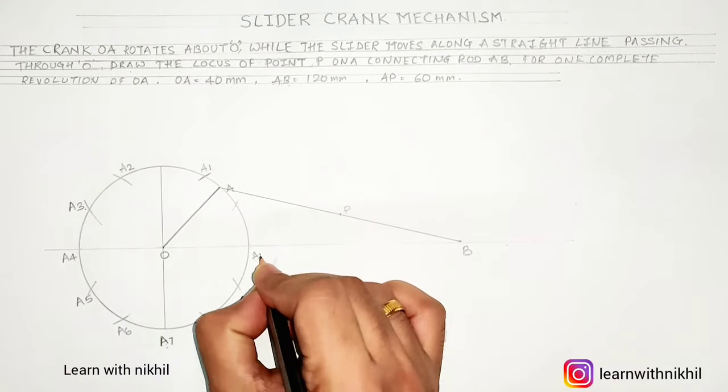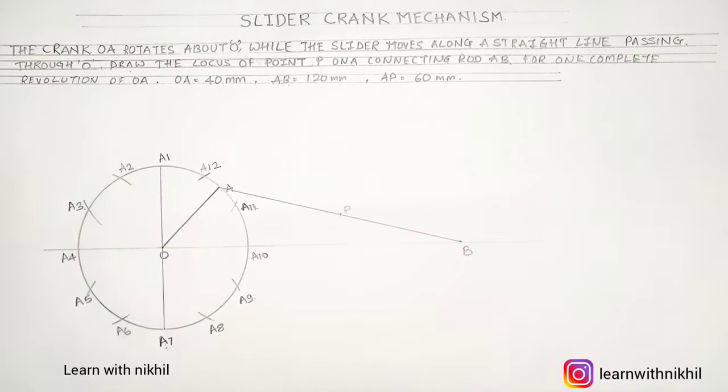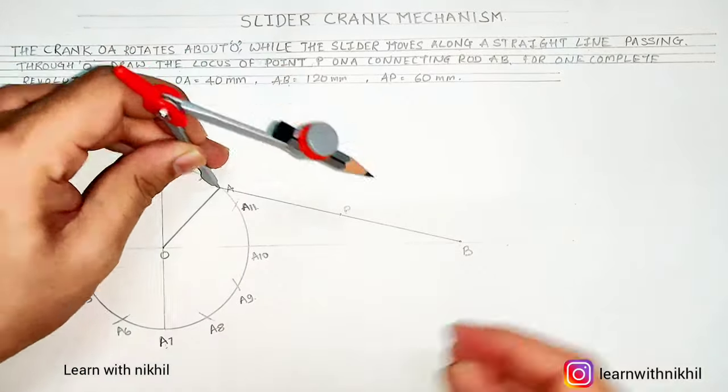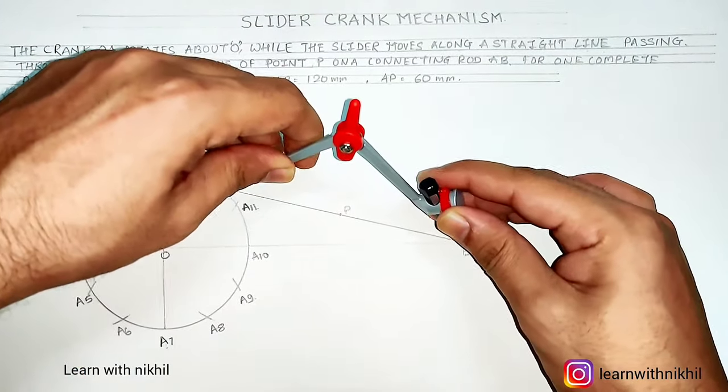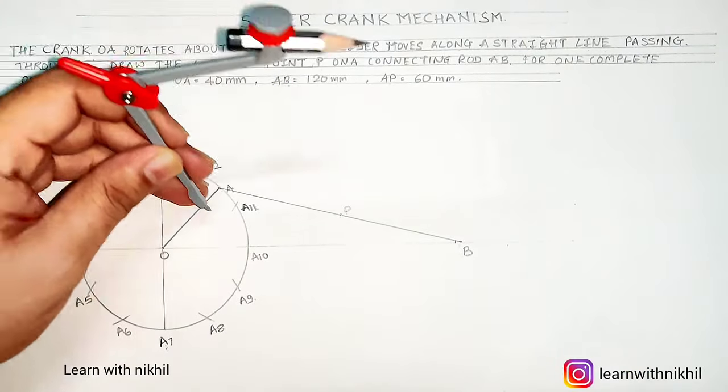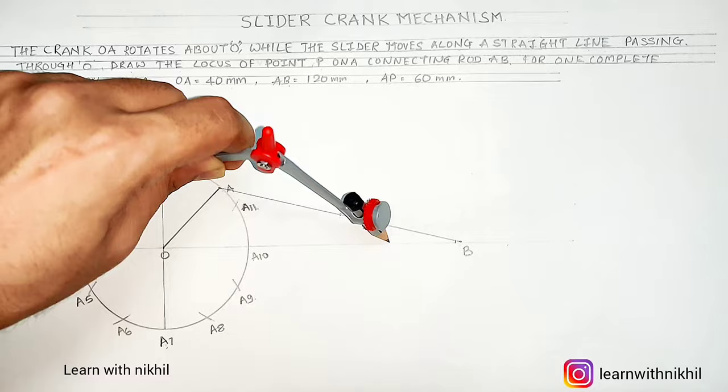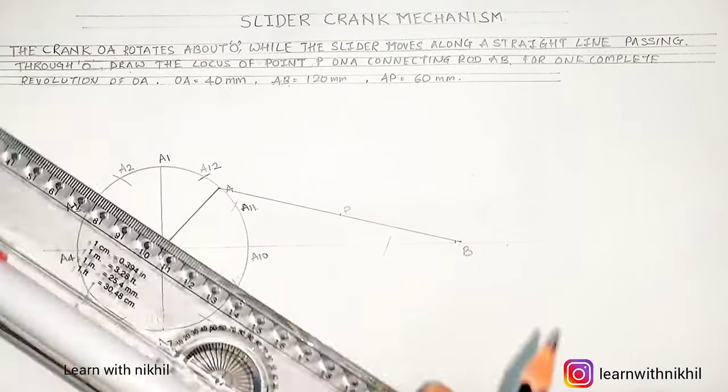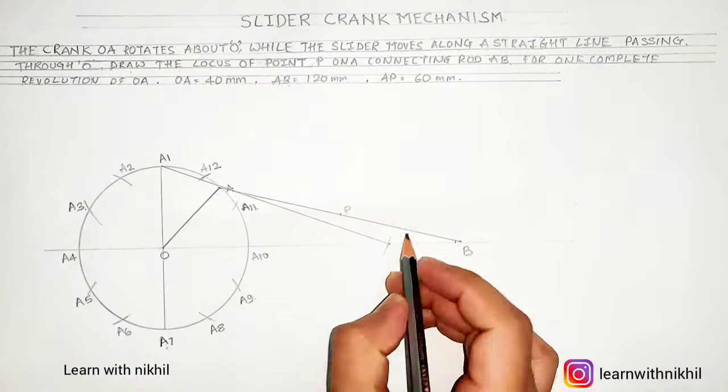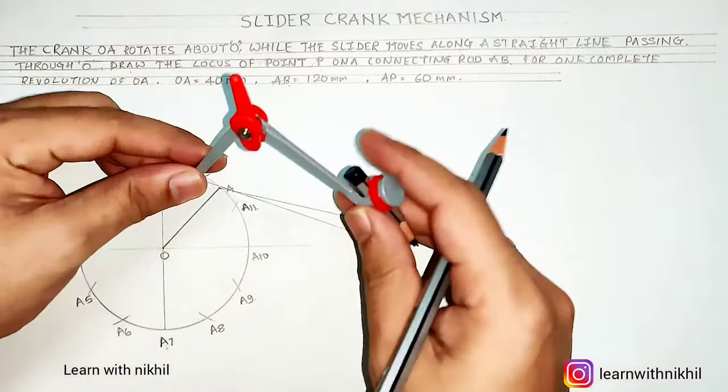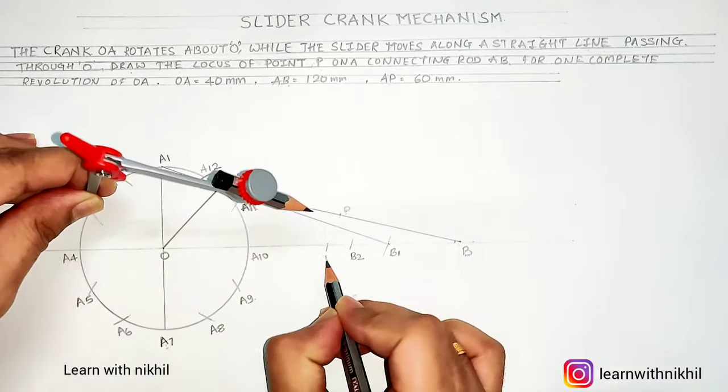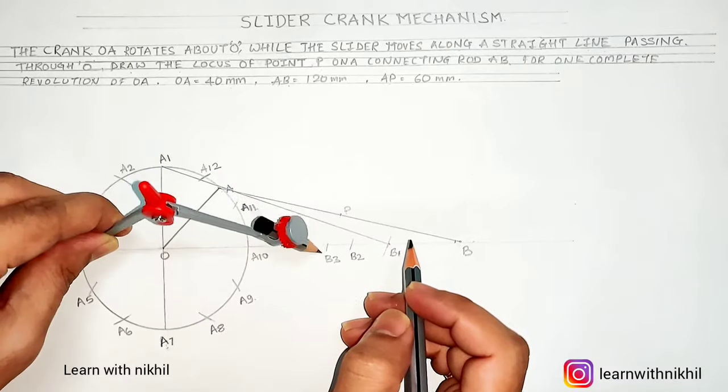Just mark the points A1 till A12, divided into 12 equal parts. Now as the piston moves, the points also move. Now the first point, that is from A to B, I'll take the distance, I'll keep it on A1 and mark the point B. B to A1 coincides with B1. So when the rod is at point A1, the slider will be at point B1.